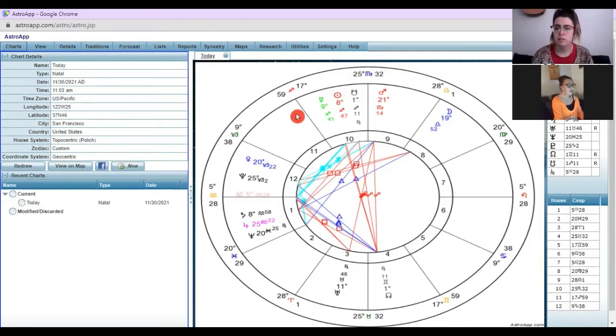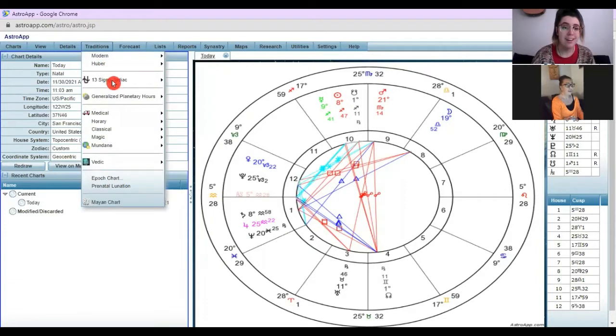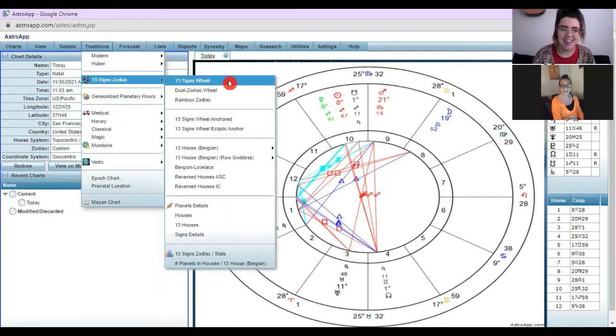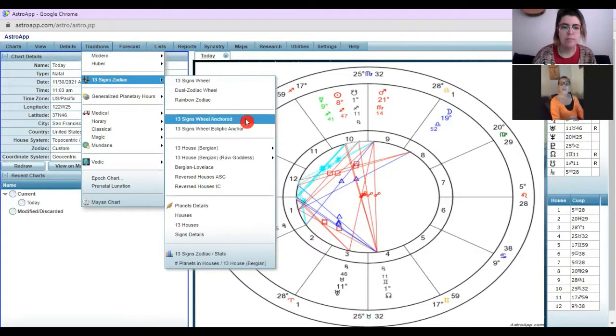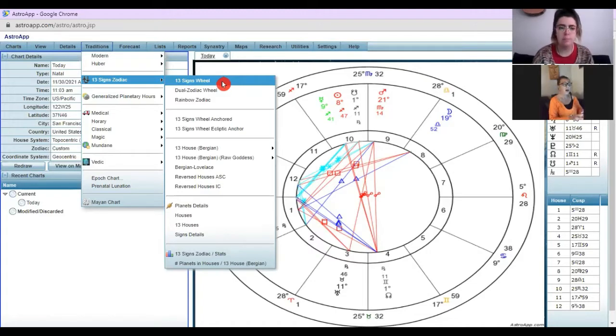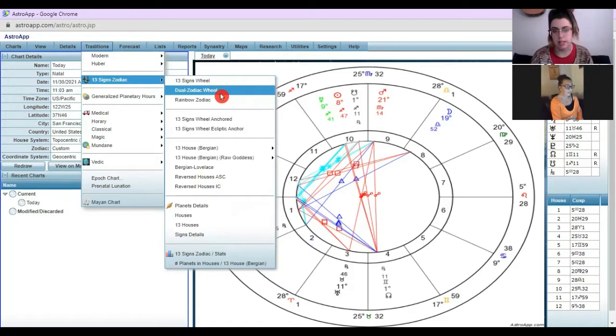Okay. So you go to traditions. Okay. And you've got the 13 signs. Yeah. So the top three are in the 12th house system. So for anyone that prefers to use the 12th house system. Okay. The top three are the 12th house system. Okay. Perfect.